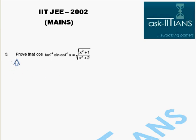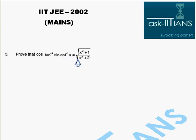In this question, we have to prove that cos(tan⁻¹(sin(cot⁻¹x))) is equal to √((x²+1)/(x²+2)).